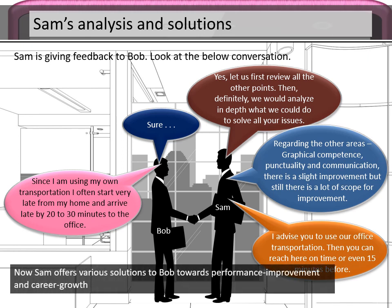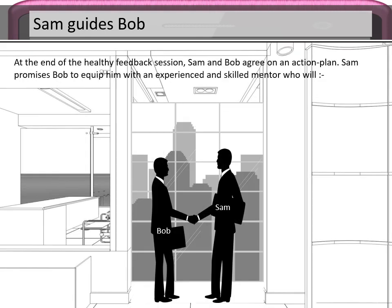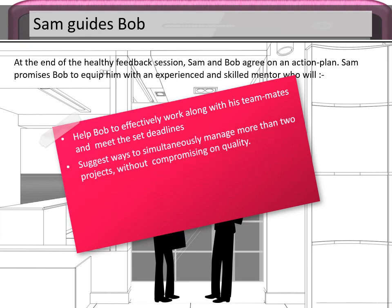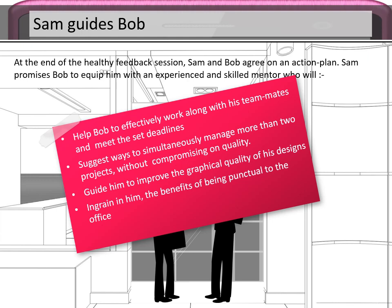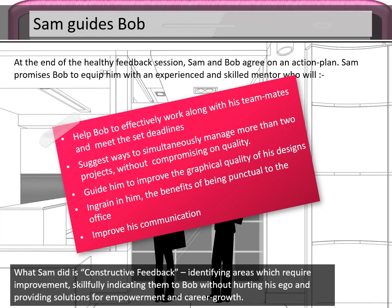Sam now offers various solutions toward Bob's performance improvement and career growth. At the end of the feedback session, Sam and Bob agree on an action plan. Sam promises to equip Bob with an experienced mentor, suggest ways to manage more than two projects without compromising quality, guide him to improve graphical quality, instill the benefits of punctuality, and improve his communication — all while identifying areas for improvement without hurting Bob's ego.